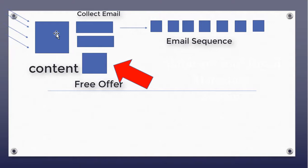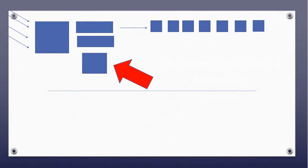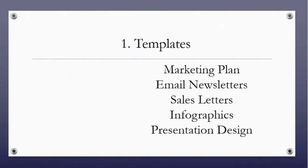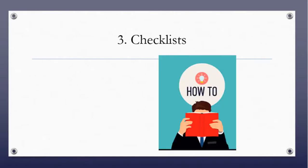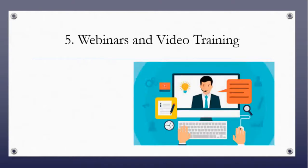Step number two is to offer something for free. Here's a quick list of different free things you can offer — you can pause the video if you need to. You can offer templates, a marketing plan, email newsletters, a swipe file, sales letters, infographics, presentation designs, quizzes or assessments, checklists — like a checklist for how to set up your YouTube channel. You might offer a webinar or video training, like five secrets to catching fish. You could offer a free trial, a cheat sheet, case studies, a free consultation call, or a free e-book. There are lots of different ideas for free stuff.